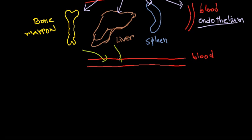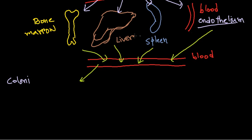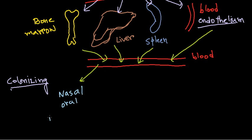In this second round of blood circulation, the virus re-enters from bone marrow, liver, spleen, and endothelium and begins colonizing the body. The first colonization targets are the nasal or oral mucous membranes. So if infection is onset and the virus escapes all these responses, it begins colonizing — first the nasal or oral mucous membranes, and also the skin. Although skin is a barrier, it can still be colonized.